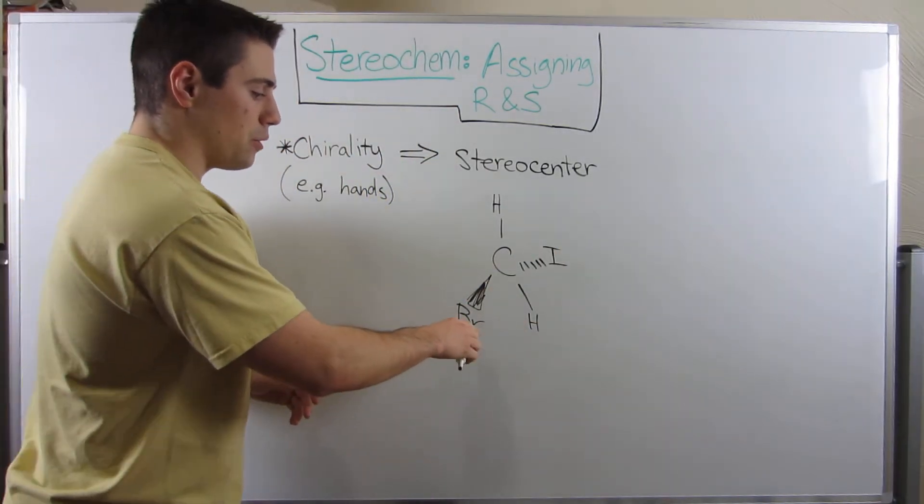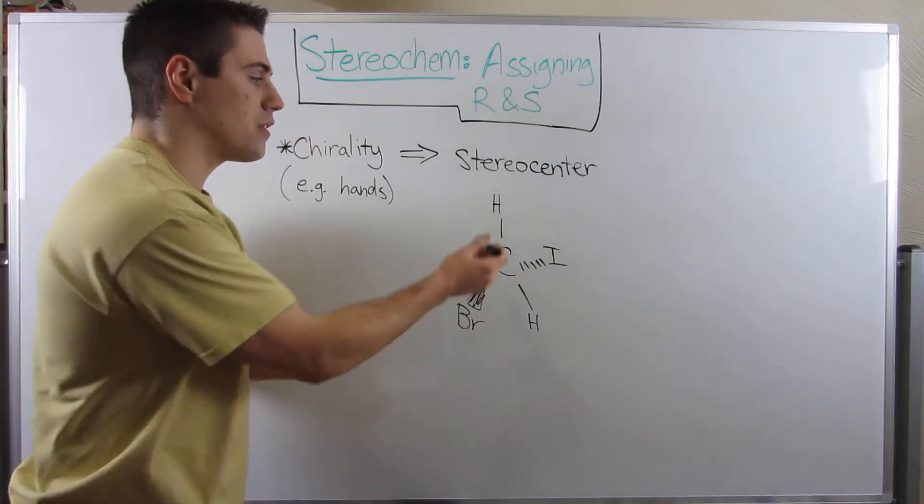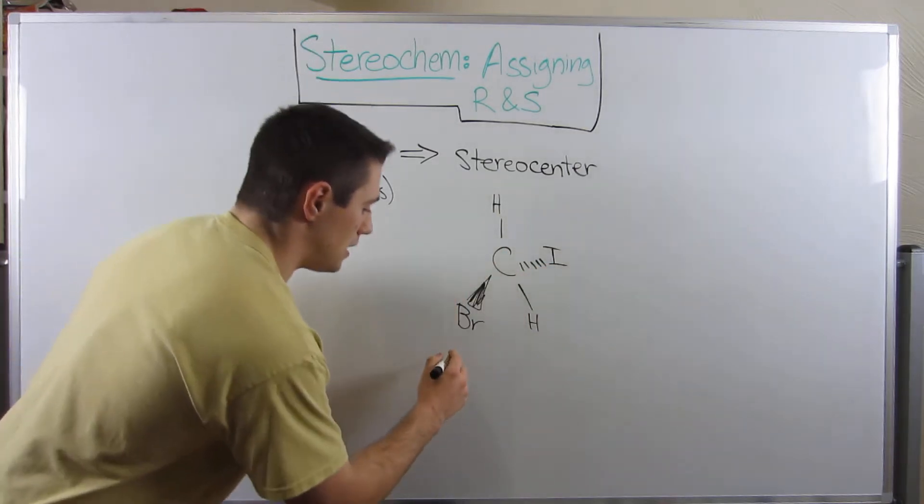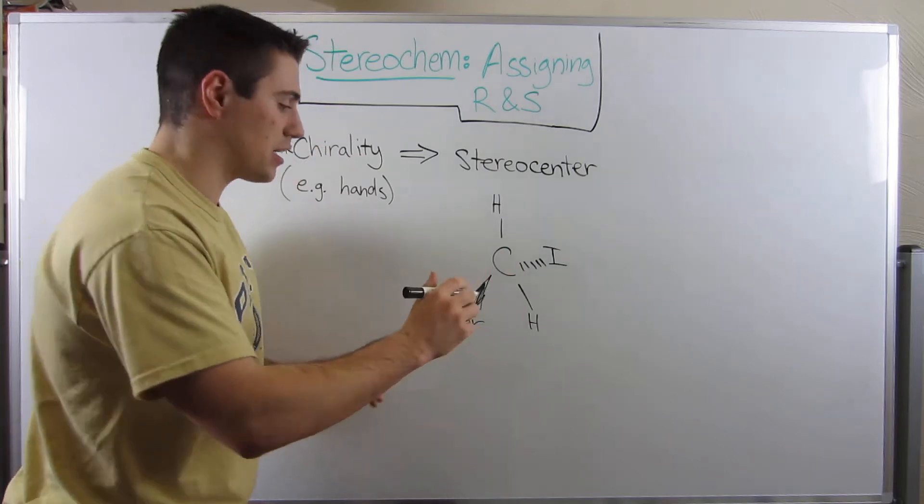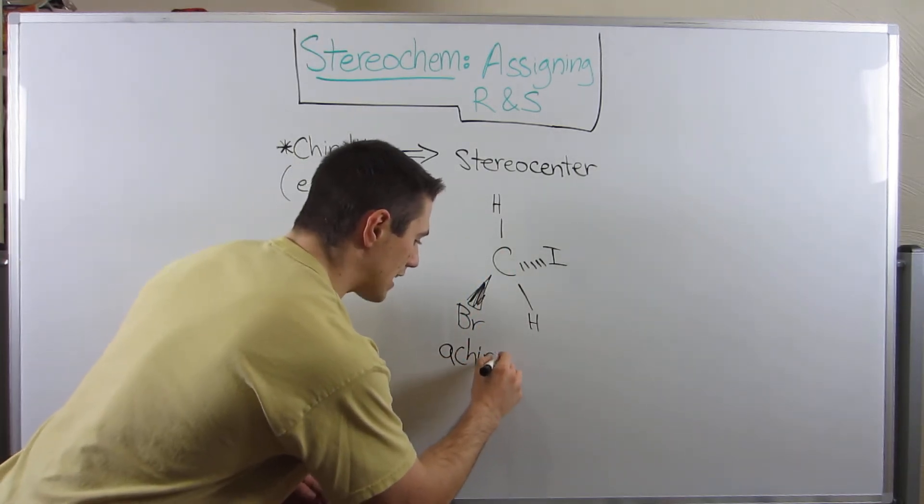This is not a stereocenter, because we are attached to one, two, three different things, because we have two hydrogens. So this carbon is not a stereocenter, and it is said to be achiral.